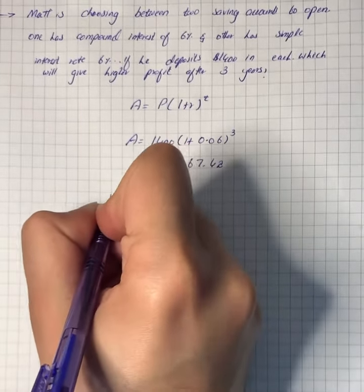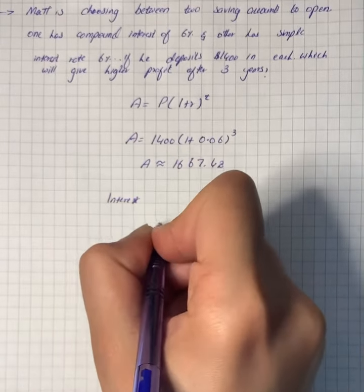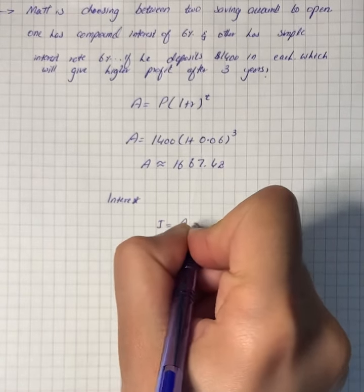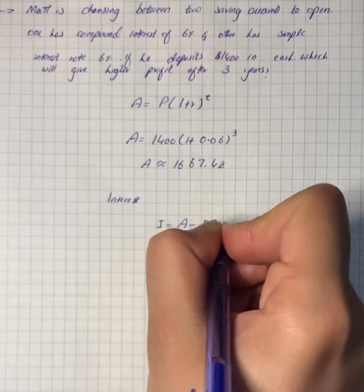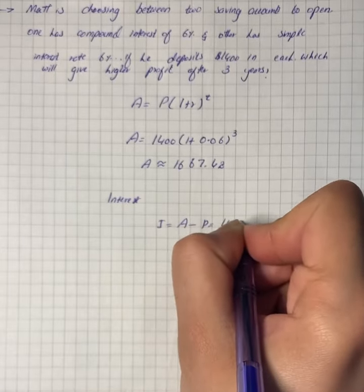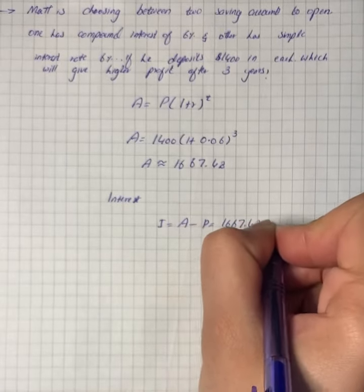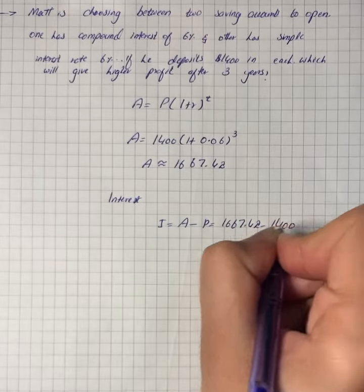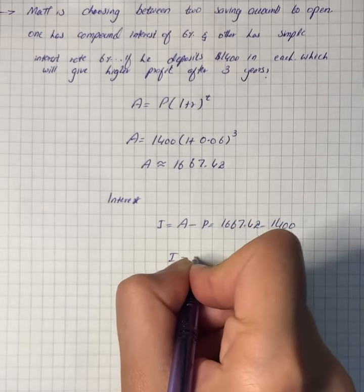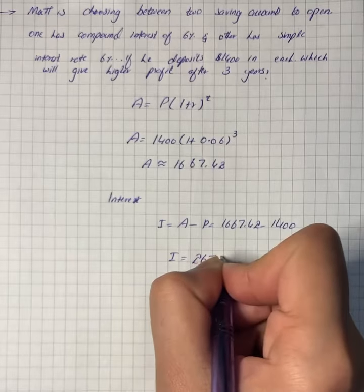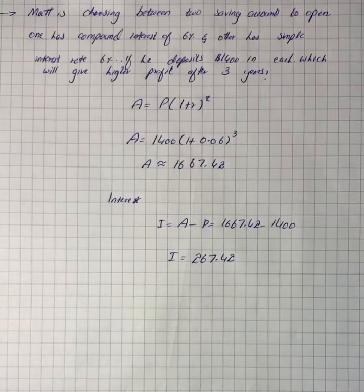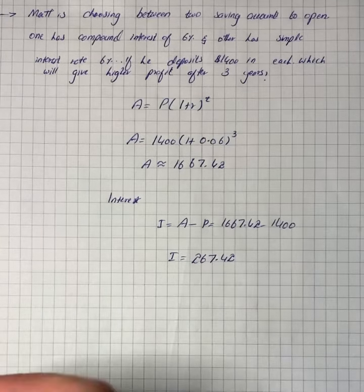The interest will be the total amount minus the deposit: $1667.42 - $1400. So your interest will be $267.42. Now for the simple interest calculation.